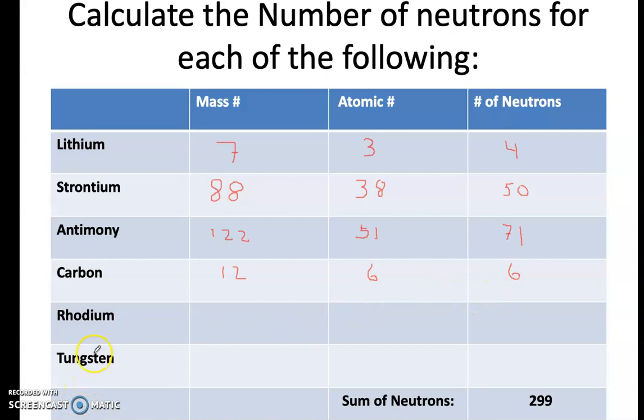Now pause the video. Find the mass number, atomic number for rhodium and tungsten. Subtract the mass number and the atomic number and calculate the number of neutrons. And your sum of all these should equal 299. So go ahead and do that right now.